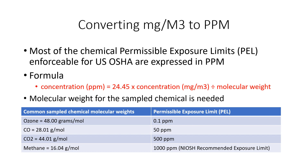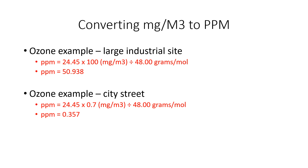Methane's limit is not enforceable by law, but an operating permit for your plant or factory may still require you to meet those levels. So let's do a little math. In the first example, we're looking at a large industrial site trying to figure out the PPM for ozone. We take 24.45 times the sample reading of 100 milligrams per meter cubed, divided by 48, and we come up with a PPM of 50.938 — which is really high.